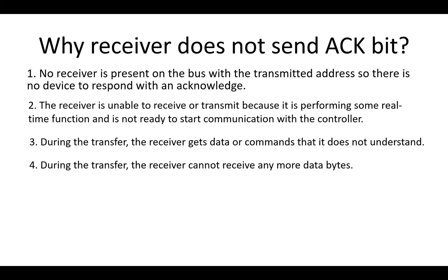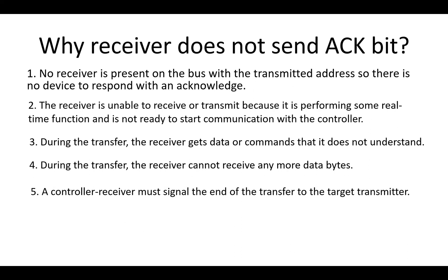The fourth condition is when, during the transfer, the receiver cannot receive any more data bytes — the ACK bit will not be sent in that case either. For example, if the receiver has a register that is only 8 bits wide but the controller thinks it is 32 bits and tries to send more than one byte, the receiver will not be able to accept those extra bytes.